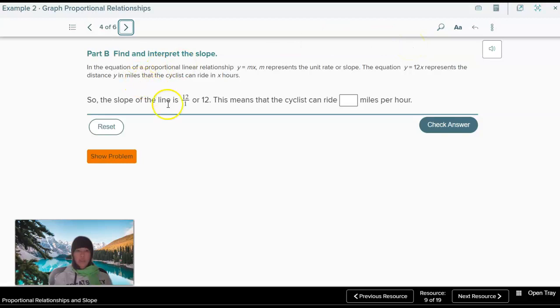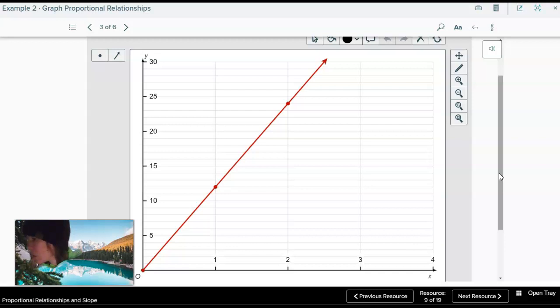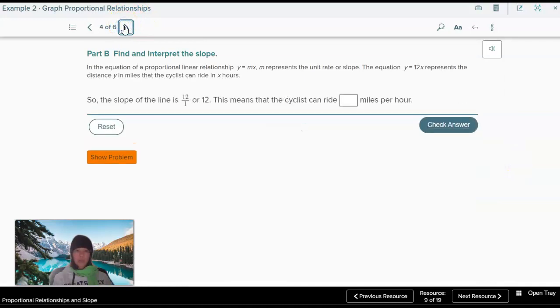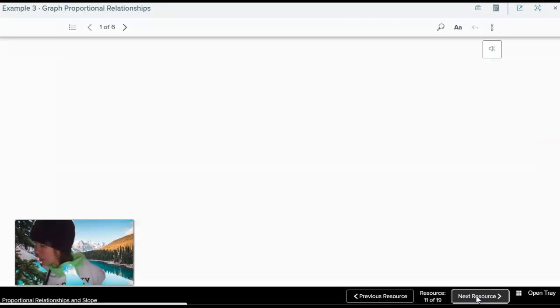Now again, in the equation y equals 12x, the slope is 12 over 1, or 12. You can see that for every hour that goes by, he goes 12 miles. So every, he goes 12 miles every hour, 12 miles every hour, 12 miles every hour. So our slope, or our unit rate, again, unit rate, slope, rate of change, all of those are the same thing. And in this case, it means that the cyclist can ride 12 miles per hour. So every hour, he goes 12 miles, 12 miles per hour.